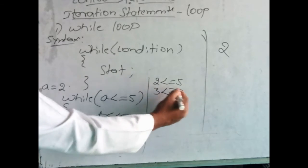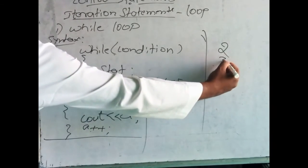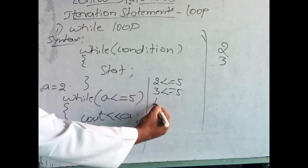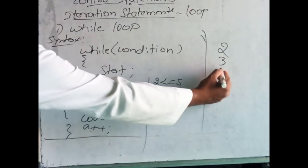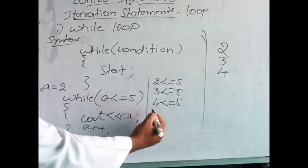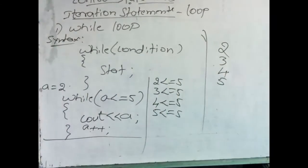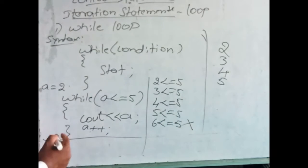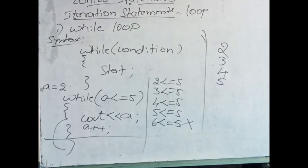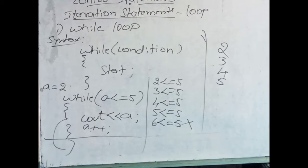After displaying 5, a increments to 6. 6 is less than or equal to 5 — this is false, so it will come out of the loop. Until the condition is true, it keeps on executing the block of instructions. This is about the while loop. Now we will see the do-while loop.